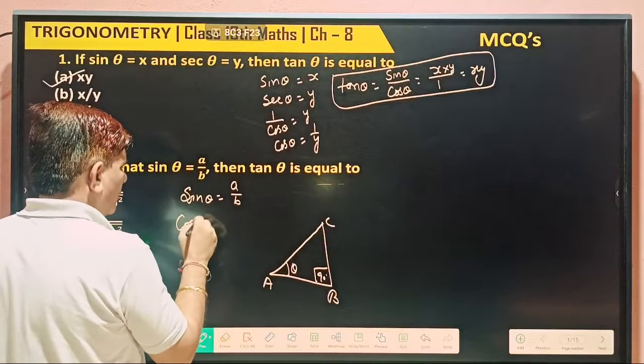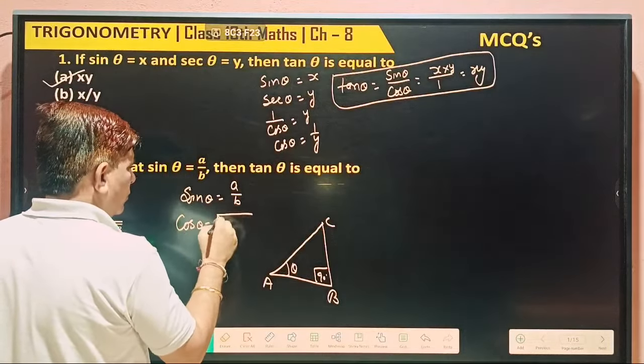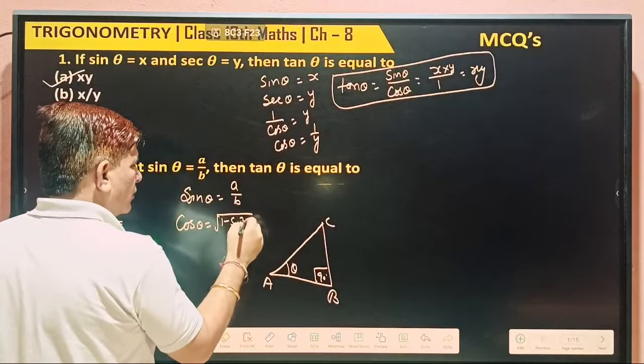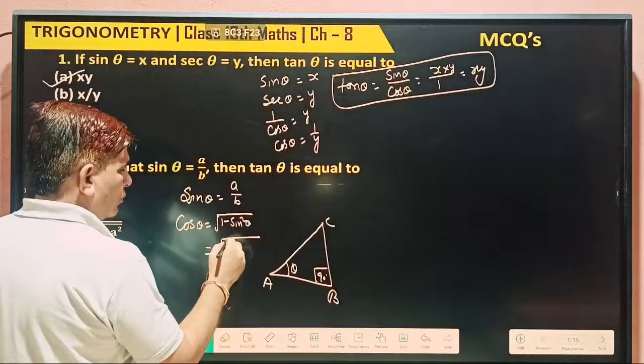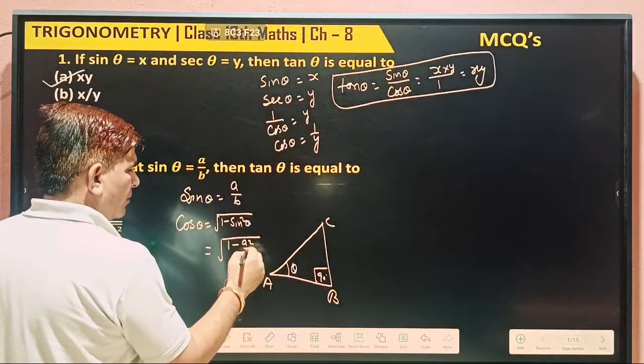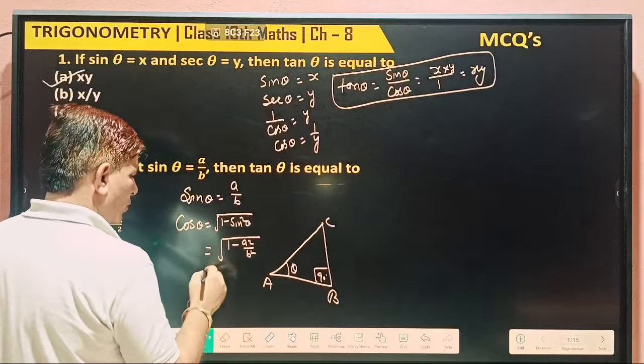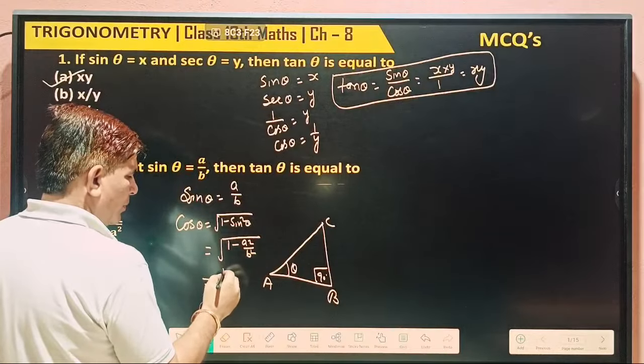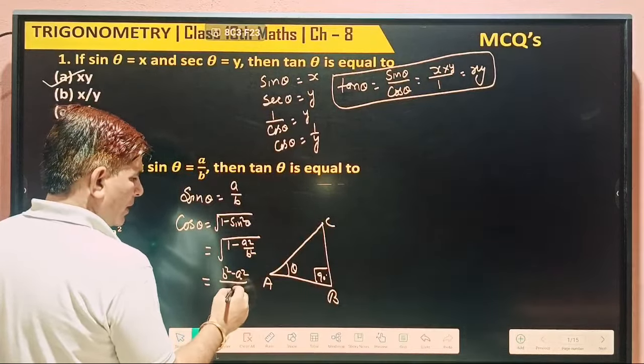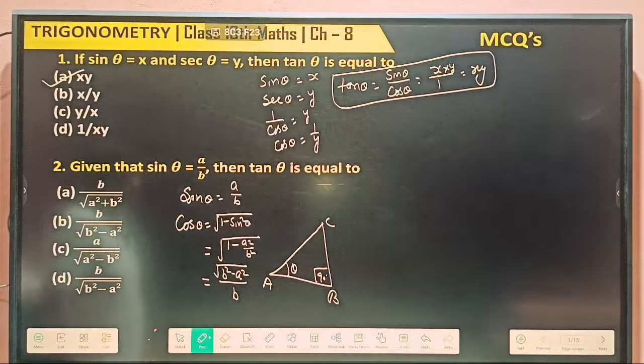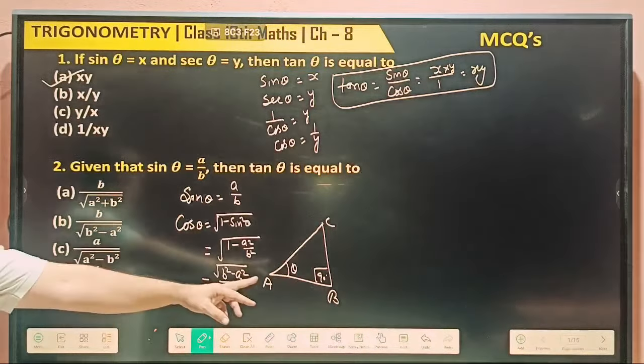Cos θ is equal to under the root 1 minus sin square θ. What is that? Under the root 1 minus a square by b square. If you can solve it, so it becomes b square minus a square by b, and this is under the root. That method also we can apply.